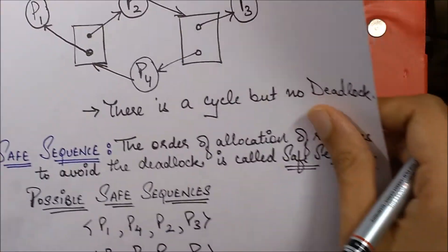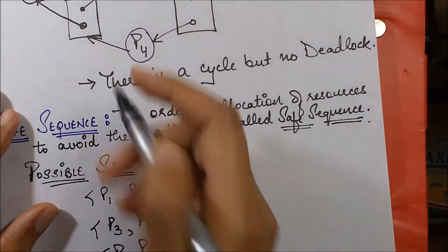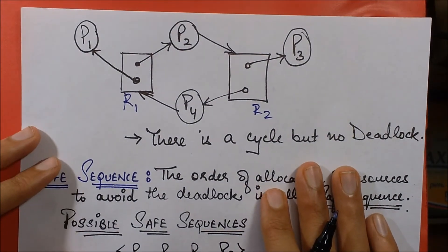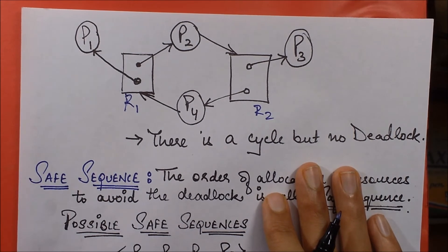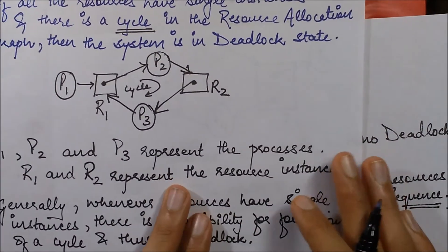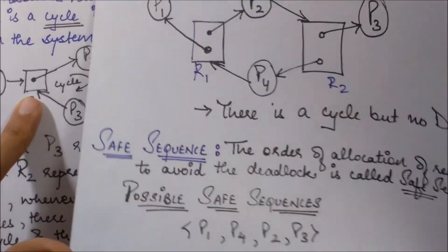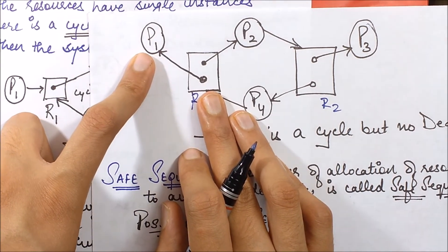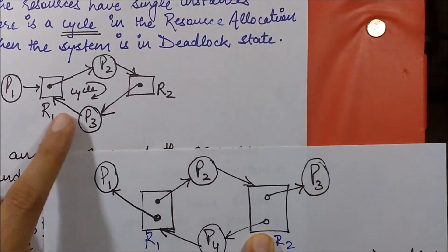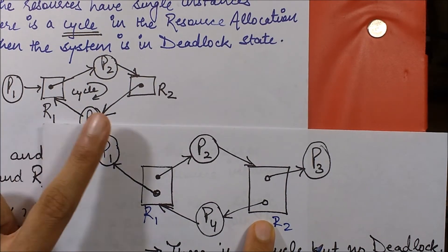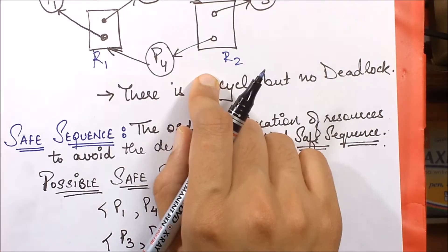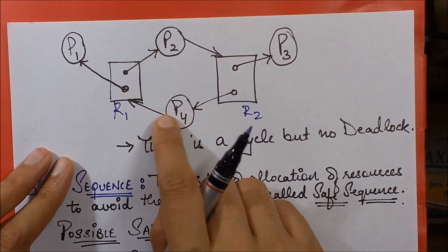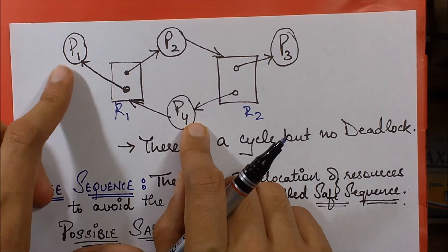In the same scenario, I've replaced resources R1 and R2 with two instances each. Now, the extra resource instance has been assigned to P1, so its request has been served. There is also another extra resource instance available. A cycle is still being formed, but let's see if there is actually a deadlock — in this case, P1 only needs this one resource instance.